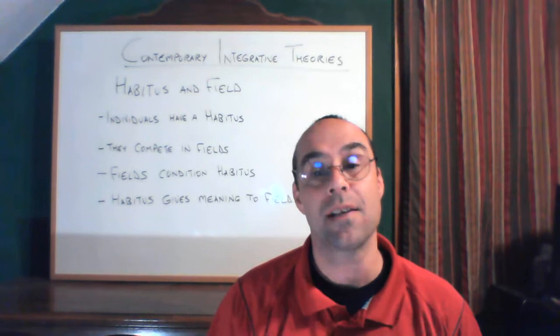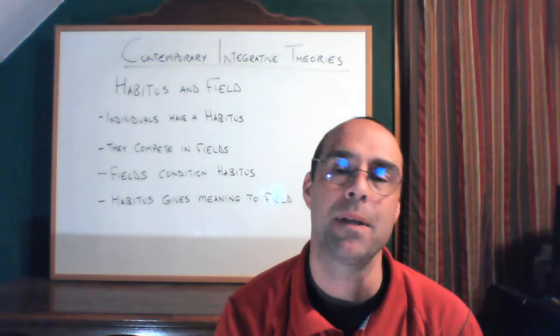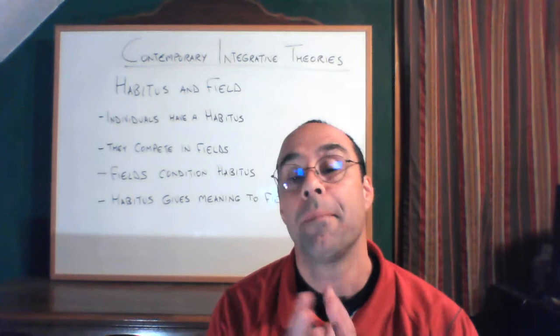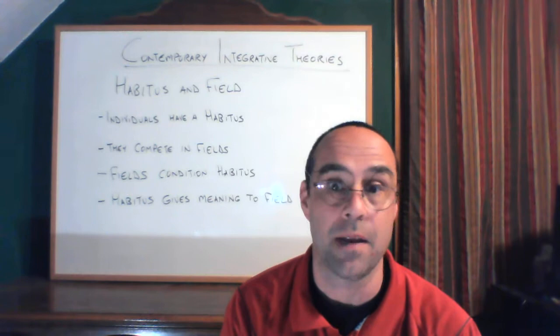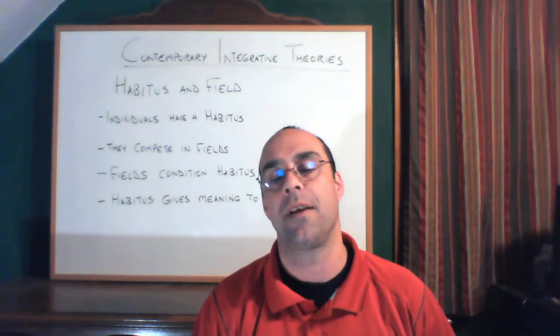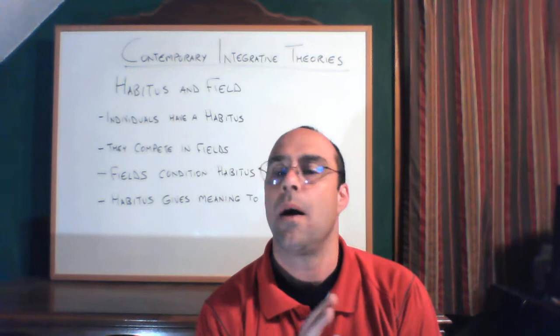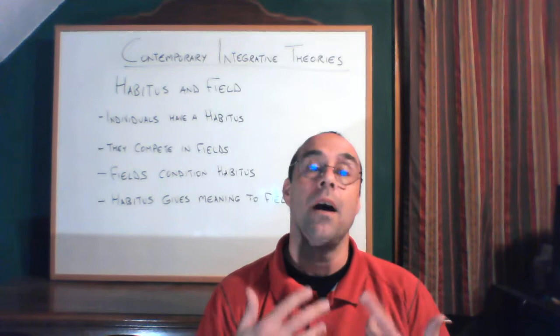Hey guys, welcome back. In this video, we're going to be talking about our last integrative theory, which is the theory of habitus and fields. Notice the U in habitus. This theory is way simpler than it seems, given the fact it has the term habitus, the term field, and it's by a French guy named Pierre Bourdieu. All of those things kind of suggest this is going to be complicated. There is a degree of sophistication in the idea of habitus, but it's not super hard. So let's get into it.